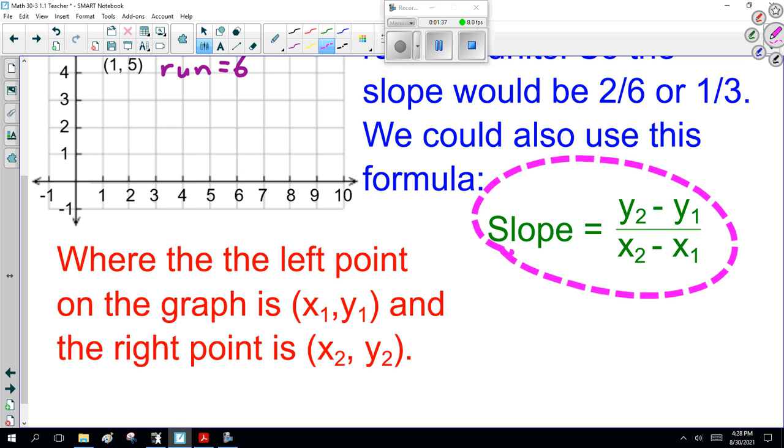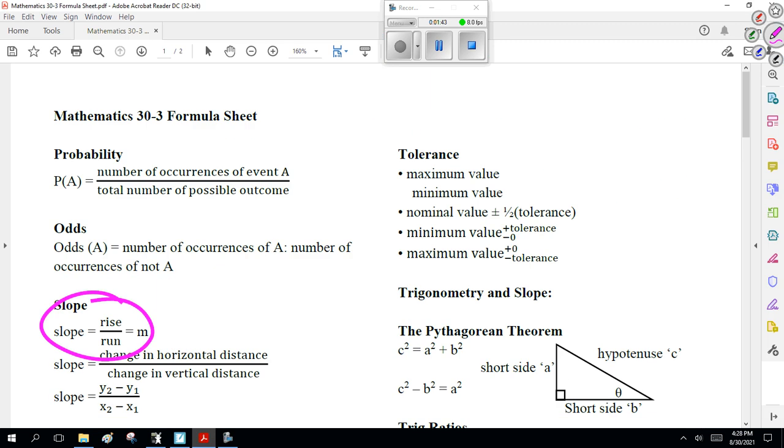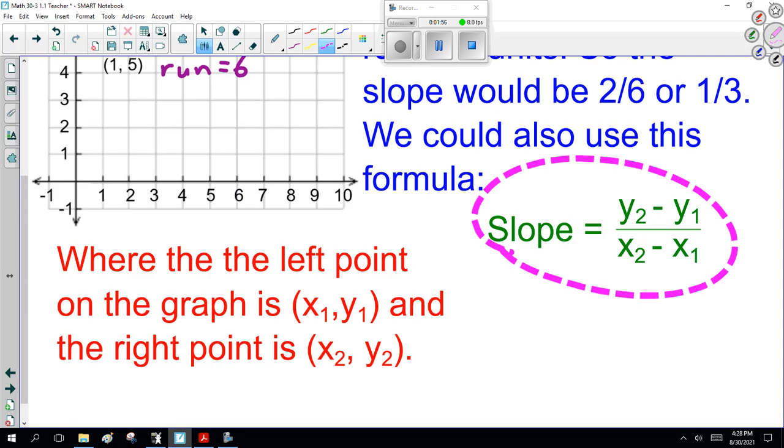The slope is y2 minus y1 over x2 minus x1. And once again, that formula is right down here in the formula sheet. I don't want you to memorize it. You learned it in Math 30-3, and you're just using it again. Hopefully you'll remember it.